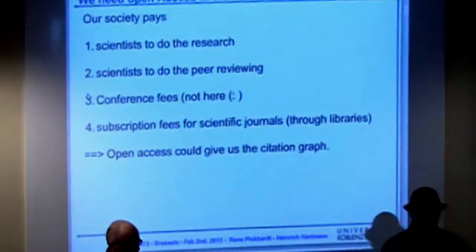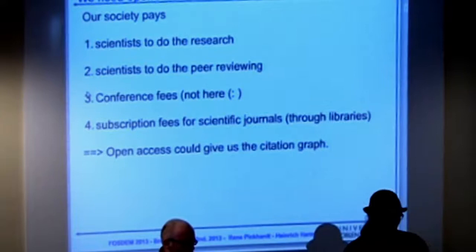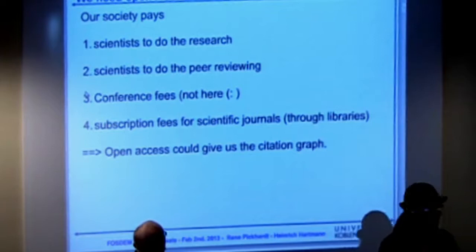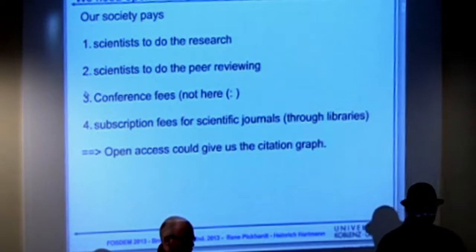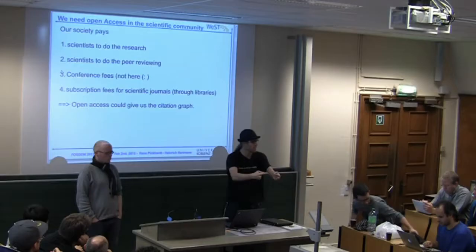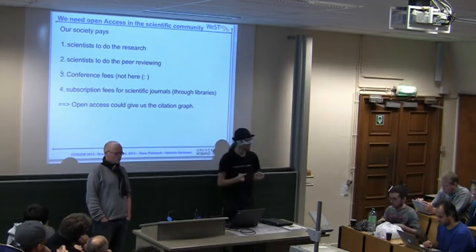Right now, this is how society works: the taxpayer pays scientists like Heinrich and me to do research. We're still being paid by the taxpayer to do the peer reviewing. Then the university pays a fee for us to attend the conference. And last but not least, the publisher has the paper, puts it behind a paywall, and the university library again pays money so that other people can read the publication.